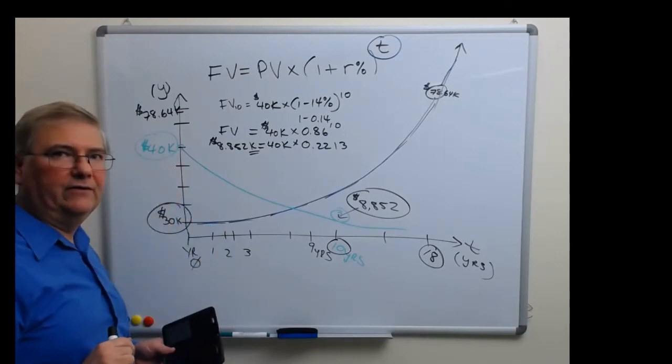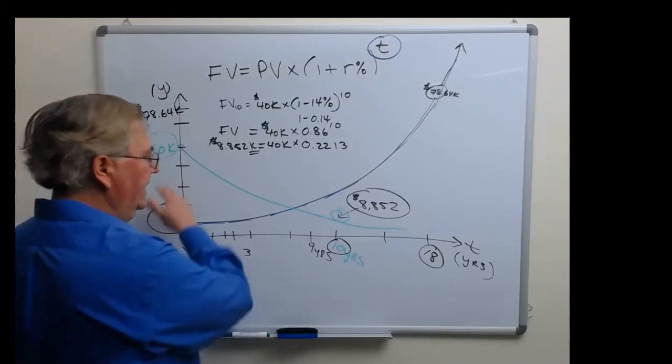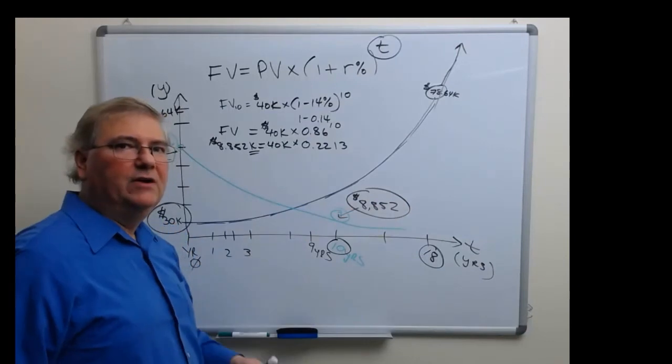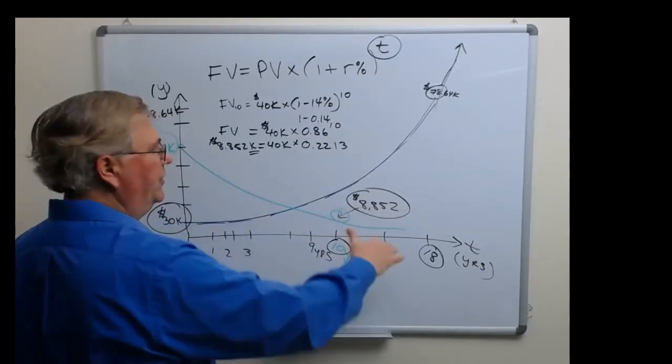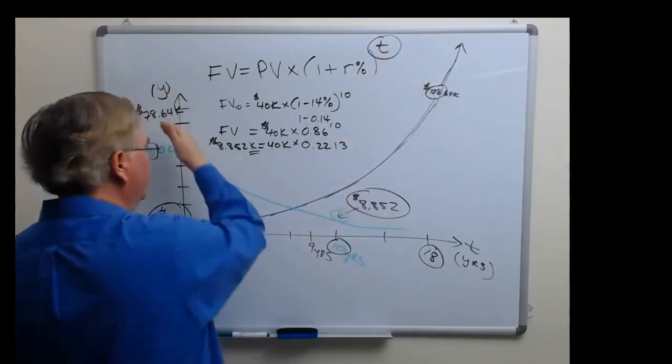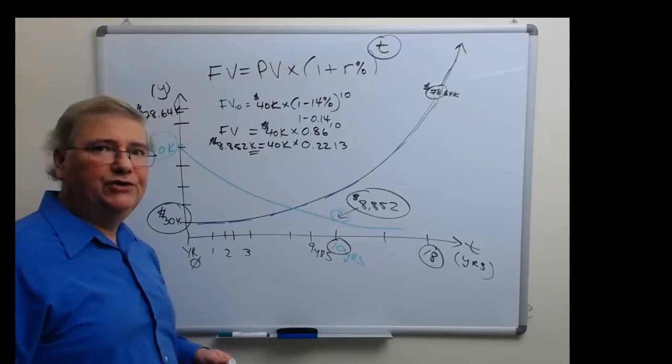The key thing to keep in mind about the future value formula is that it's an exponential, almost hyperbolic type of progression. It's a growth curve that either can escalate and grow faster and faster, or decline really fast and level out as we see in the case of depreciation on a car.